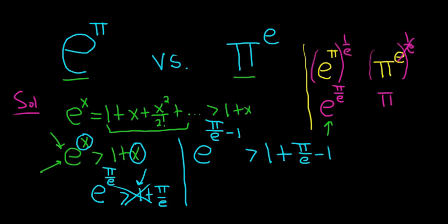And that's where the magic happens, right? The 1's cancel. So this here, you can write this as e^(π/e) times e^(-1) greater than π/e. The 1's cancel. And then when you multiply things with the same base, you add the exponents.